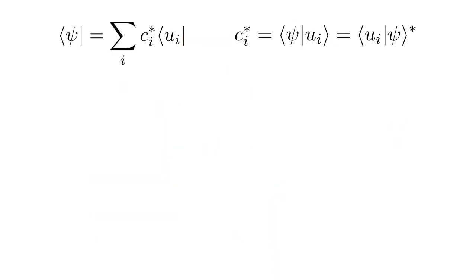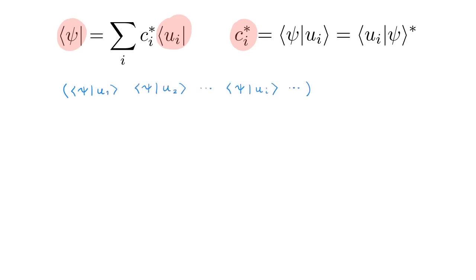Now that we know how to write kets as column vectors we next want to look at bras. We expand the bra psi in a basis u in terms of the same expansion coefficient c that we used to expand the corresponding ket, but in this case the expansion coefficients are the complex conjugates c star. Again if you need a refresher about this, check the video on representations linked in the description. To define the matrix formulation of bras we arrange these coefficients into a row vector, written in terms of the brackets psi|u or in terms of the complex conjugates of the c coefficients. Therefore in the matrix formulation of quantum mechanics, bras are written as row vectors.